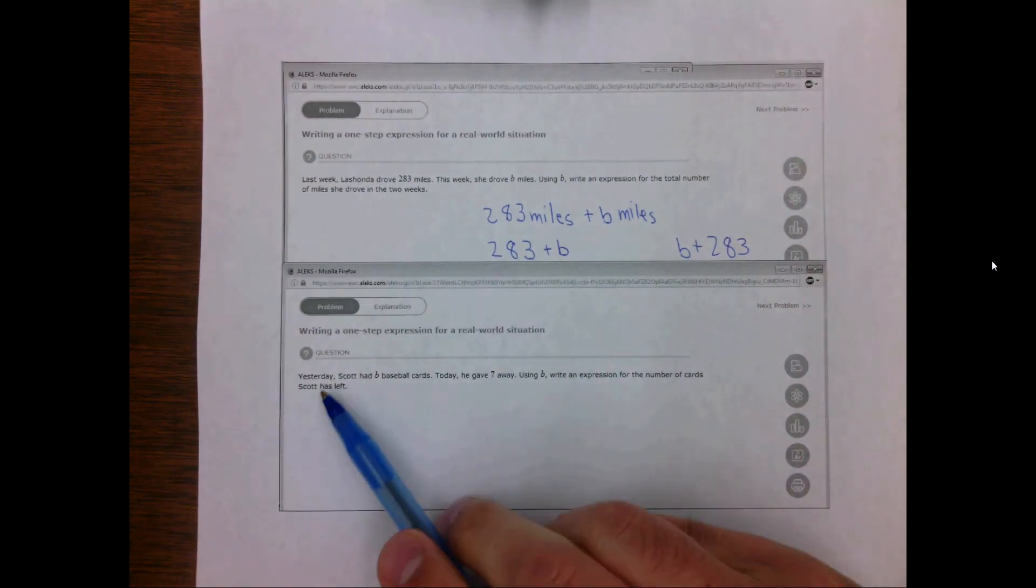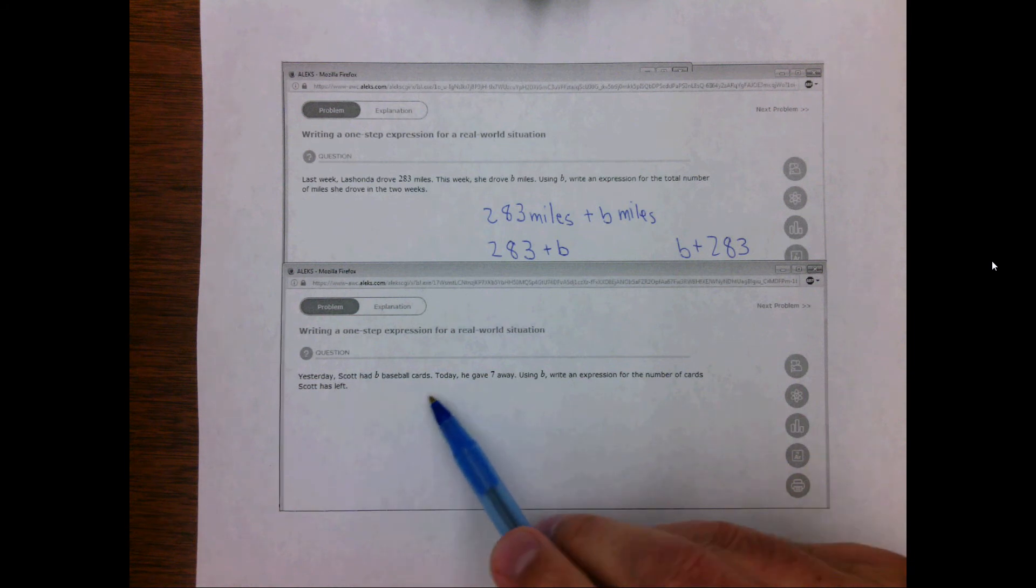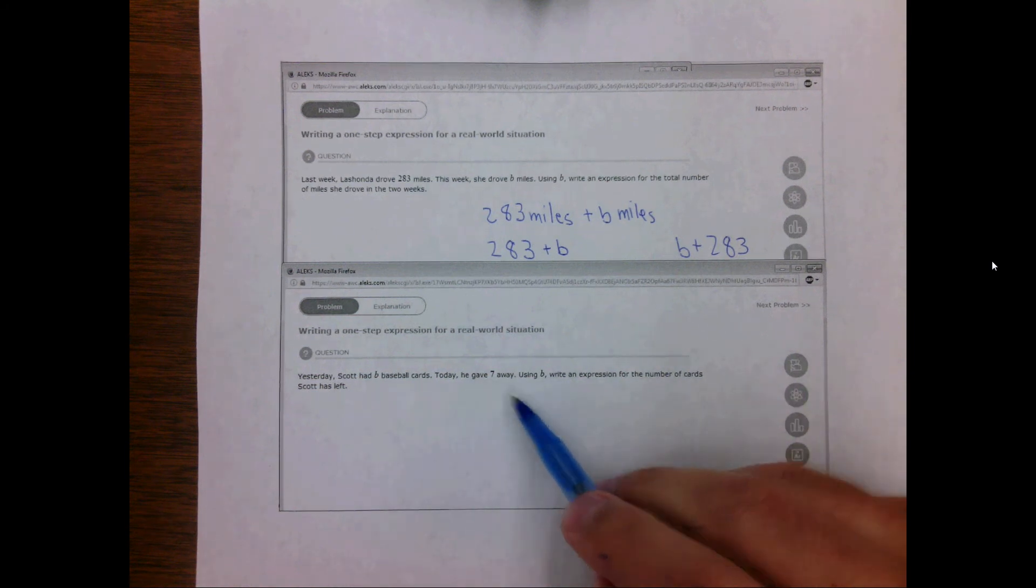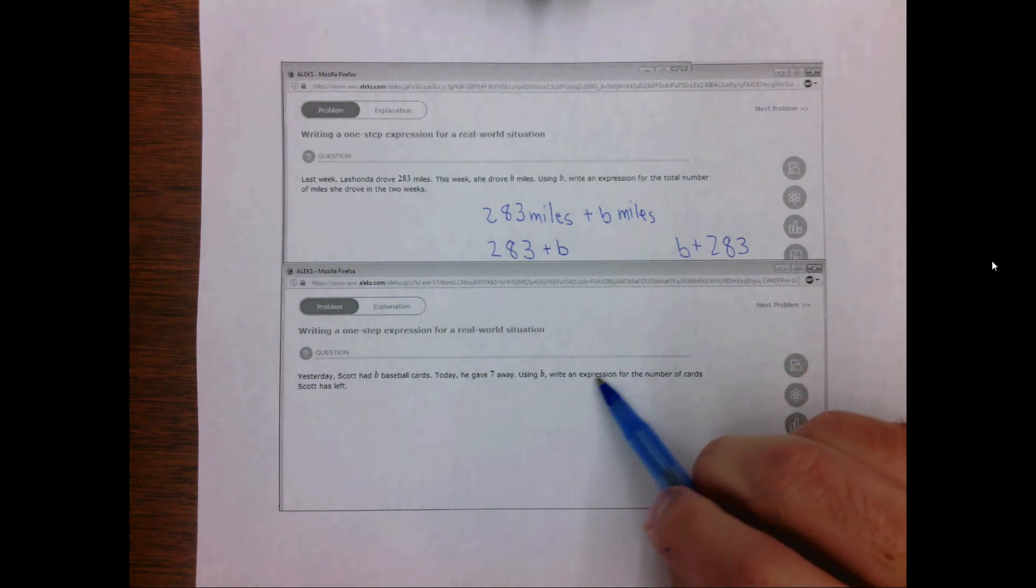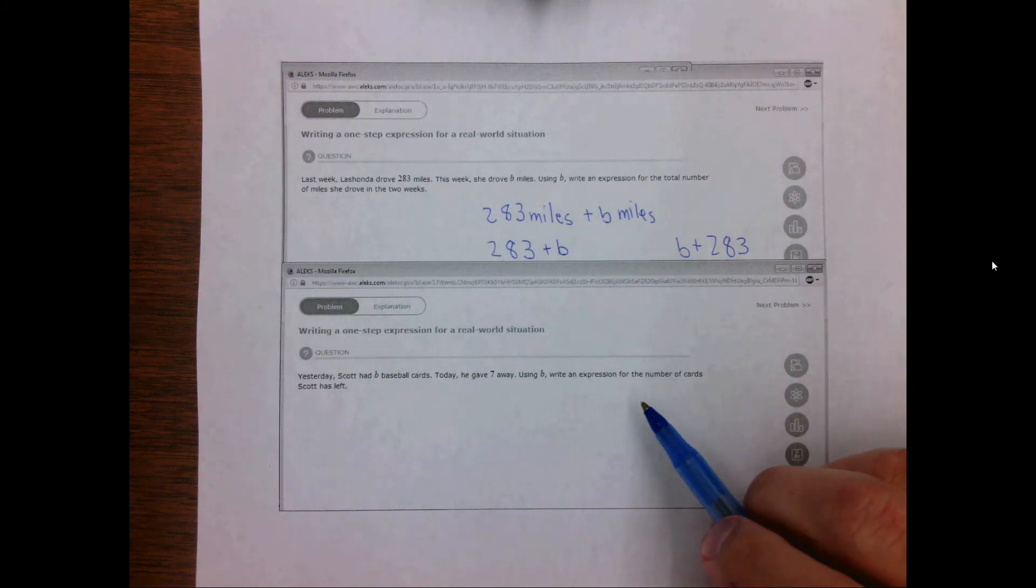In this case it says yesterday Scott had B baseball cards. Today he gave seven away. Using B, write an expression for the number of cards Scott has left.